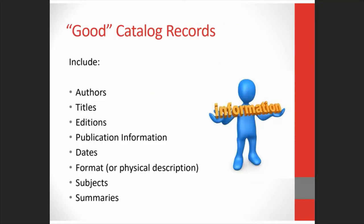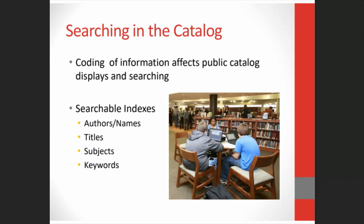Here's the type of information you want to find in good cataloging records: authors and titles, editions, publication information and dates, the format or physical description, subjects, summaries, and so much more. Good cataloging records include coding of this information, which really affects your search results in your public catalog. Your library system uses this information recorded in your MARC records to create indexes which facilitate the searching of your collection. Some examples of these indexes are for names, titles, subjects, and keywords. The coding also affects the display of your catalog.